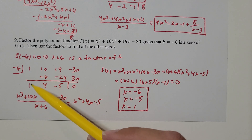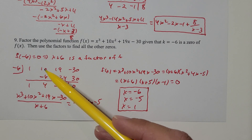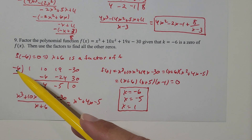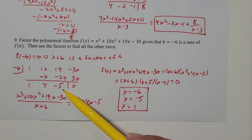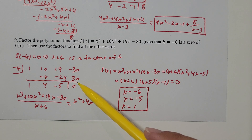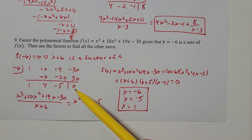I'm going to bring the 1 down. 1 times negative 6 is negative 6. Then add column two: 10 minus 6 is 4. 4 times negative 6 is negative 24. Add column three: 19 minus 24 is negative 5. Negative 5 times negative 6 is 30, and negative 30 plus 30 is zero left over. That's what we expected because we already know that negative six is a zero.